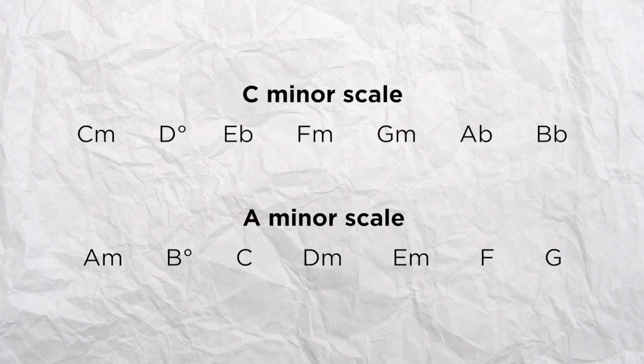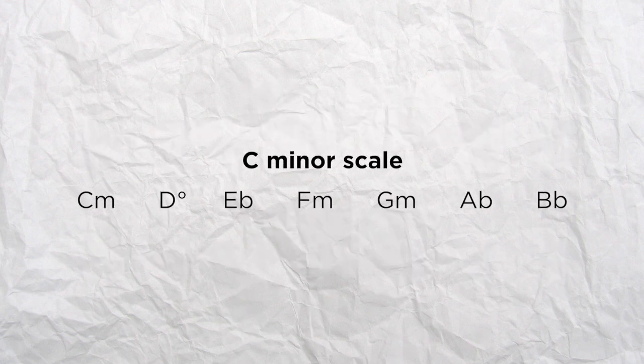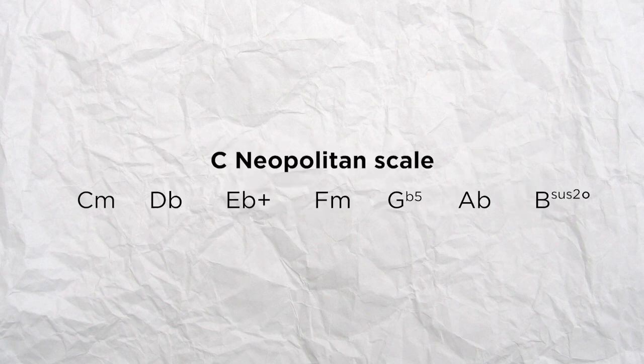Or you can consider each chord as the first degree of its own tonality. So when you play a C minor, you can use the scale of C minor or any other scale where the first degree is a C minor.